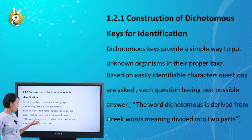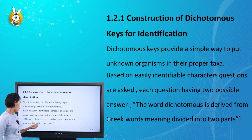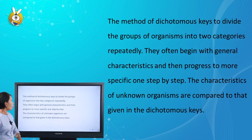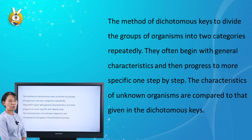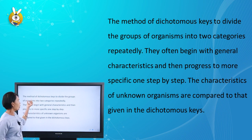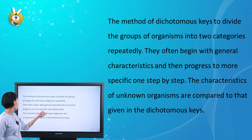The dichotomous key divides a group into two parts. The method of dichotomous keys divides the group of organisms into two categories respectively. They often begin with general characteristics and then progress to more specific ones, step by step.